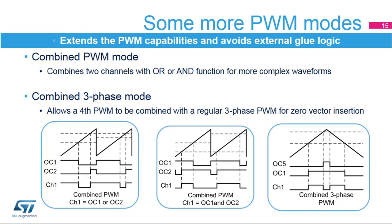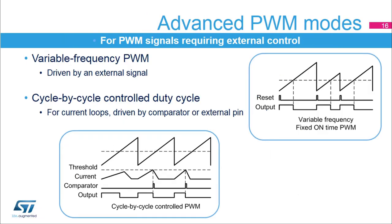This allows two periodic pulses to be generated with any pulse width and any phase relationship. The combined three-phase mode specifically targets three-phase motor control applications. Channel 5 of the timer can be combined with any of the three channels 1, 2, or 3 to insert a low state in the middle of a centered pattern PWM signal. This mode greatly simplifies the implementation of low-cost current sensing techniques for three-phase motor control using a technique referred to as zero-vector insertion.